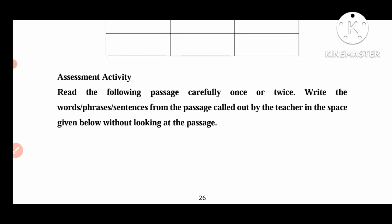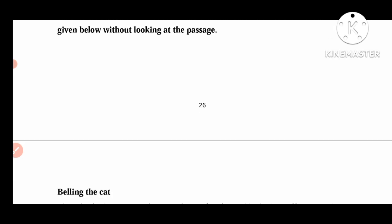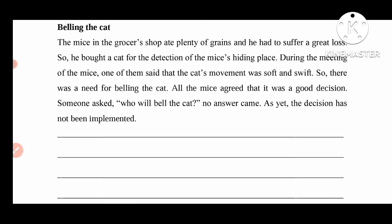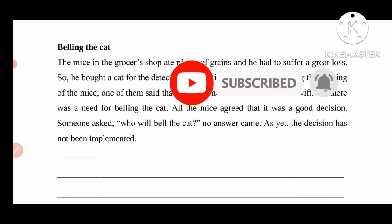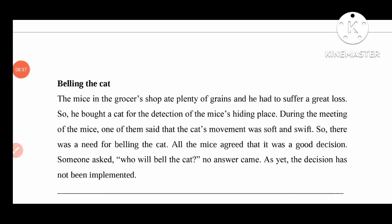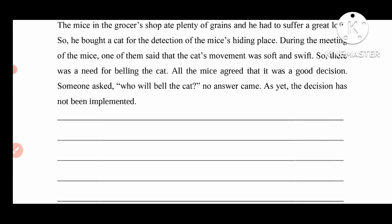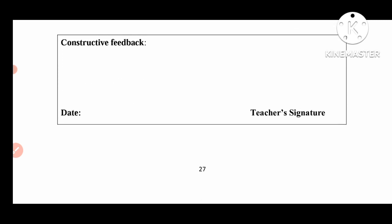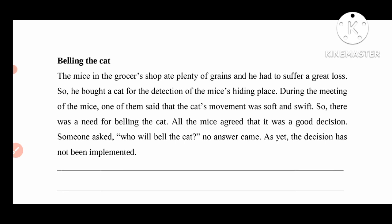Assessment activity: Read the following passage carefully once or twice, then write the words, phrases, and sentences called out by the teacher in the space given, without looking at the passage. The passage is about a cat, mice, and a grocer's shop. The teacher will read the passage and students will read it two to three times, then write dictated sentences. This is the assessment activity of this learning sheet. Thank you for watching Learning Sheet 3.